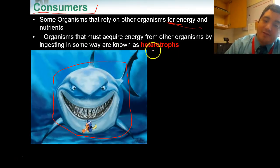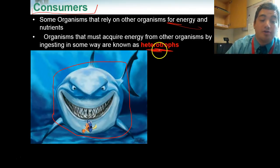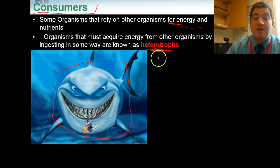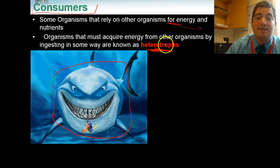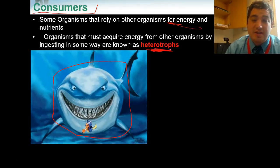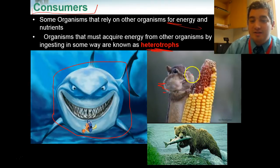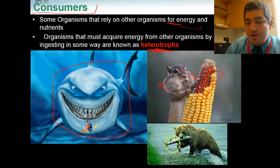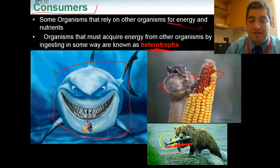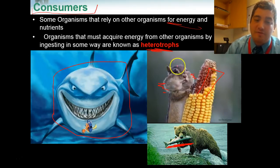Another fancy word for consumers is heterotrophs. Autotrophs are producers that made their own food. Heterotrophs are anything that must eat another organism or its energy to make energy and nutrients. Besides Bruce, we have this little squirrel with his chubby cheeks eating corn — he's a heterotroph because he's eating another living thing. And we have this grizzly bear who ate a giant salmon, again eating another organism for energy and nutrients — a heterotroph or a consumer.